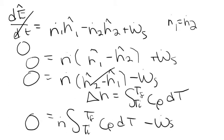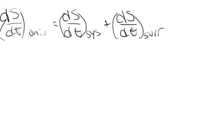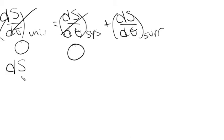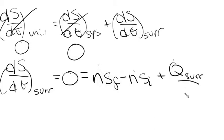We need to go back and solve for the final temperature using an entropy balance. For the entropy balance: dS/dt_universe = dS/dt_system + dS/dt_surroundings. At steady state, dS/dt_universe = 0. And for maximum work conditions, dS/dt_system = 0 (as proven in the textbook). So dS/dt_surroundings = 0, which equals N-dot(S_f − S_i) + Q_surroundings/T_surroundings.